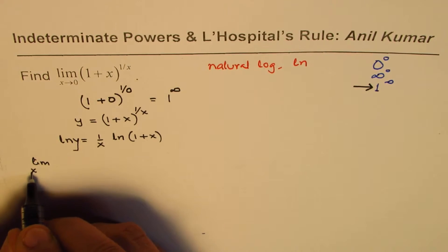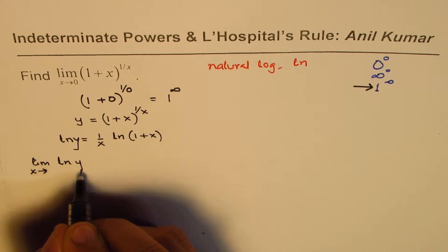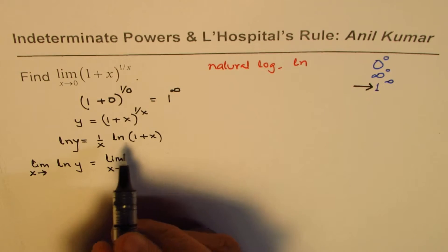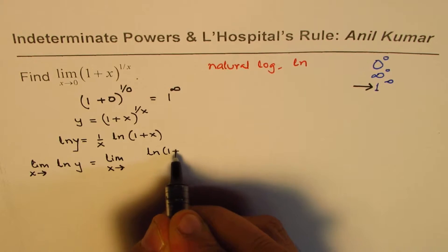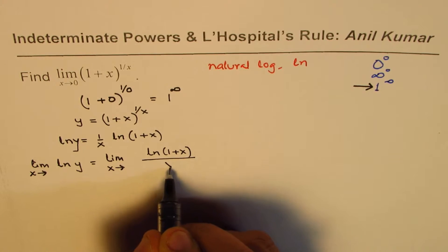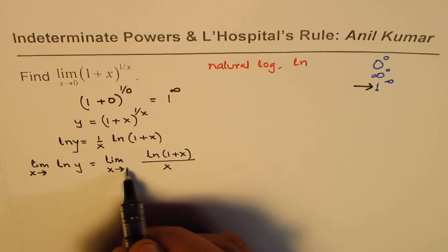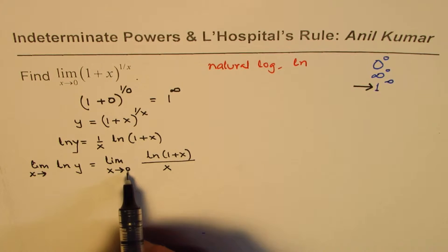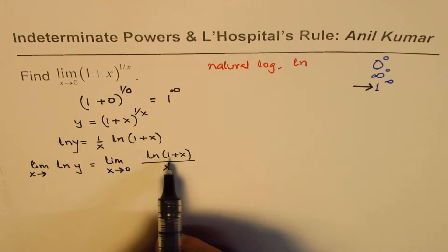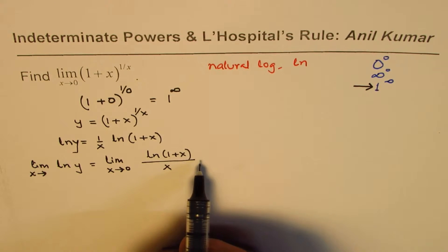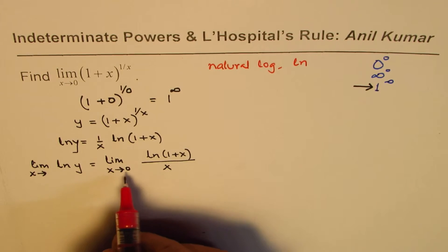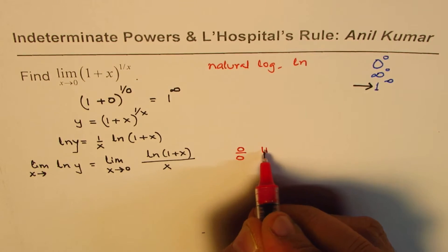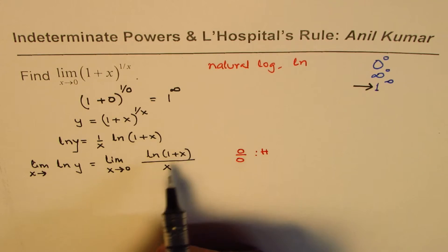Now we write: limit as x approaches zero of ln y equals the limit as x approaches zero of ln(1 + x) over x. Since x approaches zero, if we put x equals zero we get zero in the denominator, and ln(1) in the numerator which is also zero. So this is a zero over zero form, and at this stage we can apply L'Hôpital's rule.